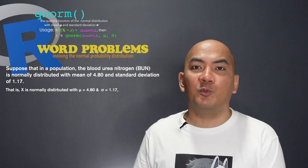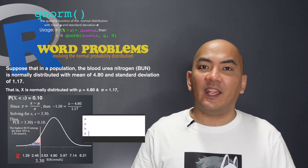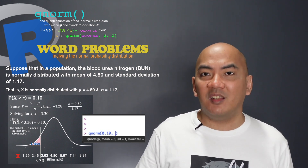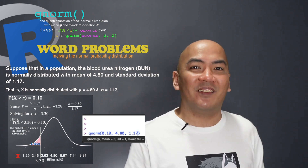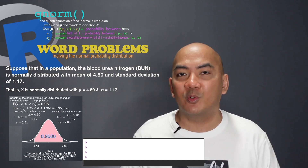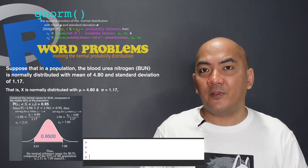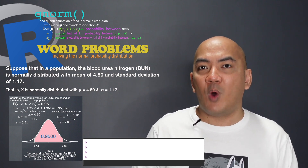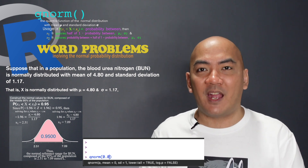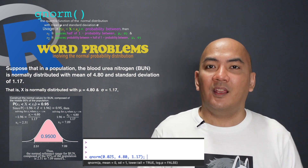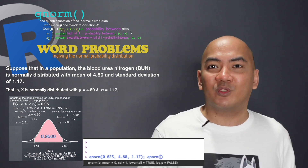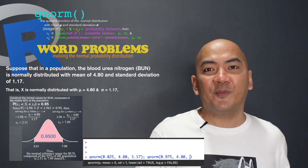Similarly, if you're finding X given the cumulative probability, use the qnorm function. So if the cumulative probability is 0.10, type qnorm(0.10, 4.80, 1.17). And if you're asked to find X1 and X2 with area in between equal to 0.95, find X1 using qnorm(0.025, 4.80, 1.17) — that's half of (1 - 0.95). To find X2, use qnorm(0.95 + 0.025, 4.80, 1.17).